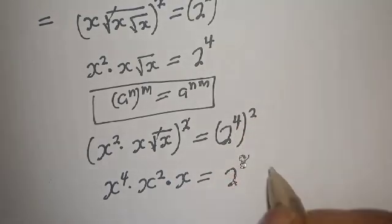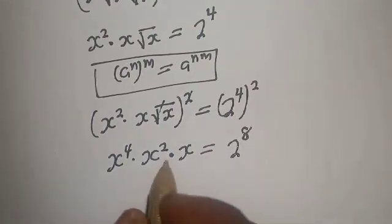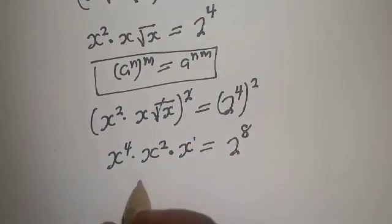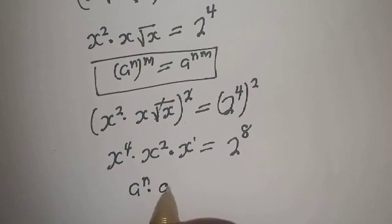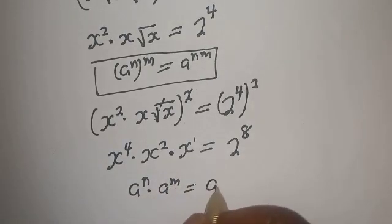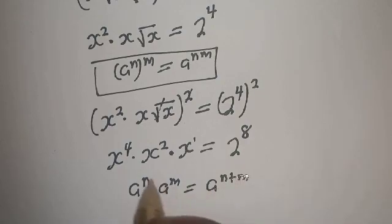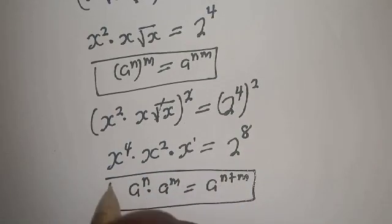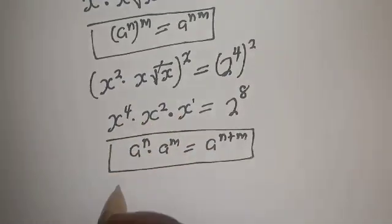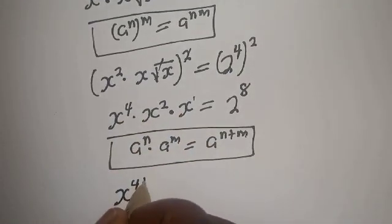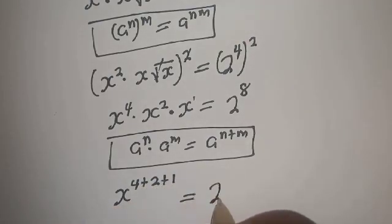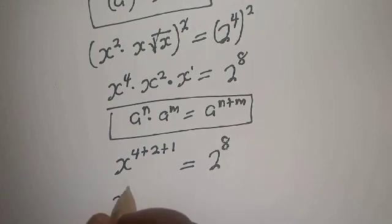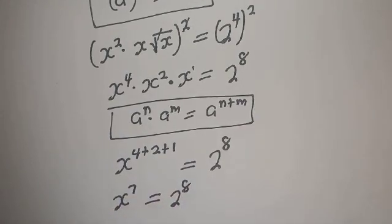This is equal to 2 raised to power 4 times 2, that is 8. This term is also raised to power 1. Using the rule that a raised to power n multiplied by a raised to power m equals a raised to power n plus m, the whole expression becomes s raised to power 4 plus 2 plus 1, equal to 2 raised to power 8. Therefore s raised to power 7 equals 2 raised to power 8.